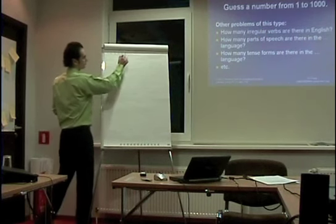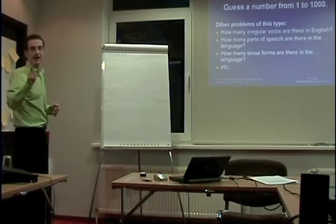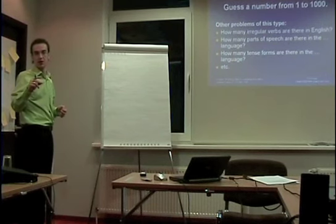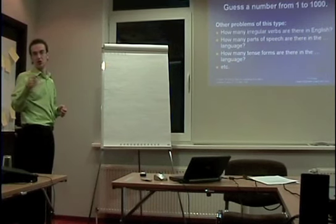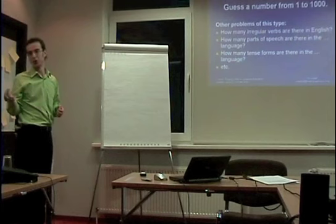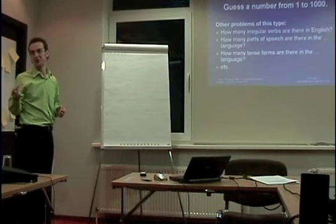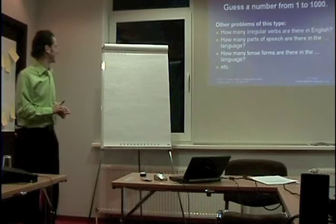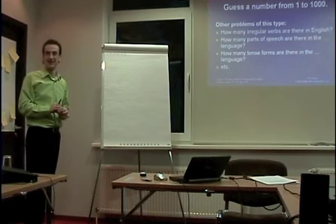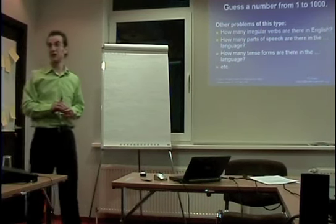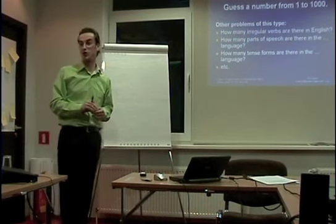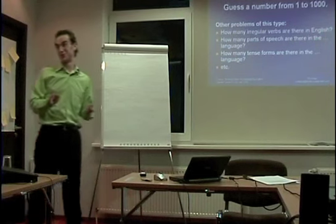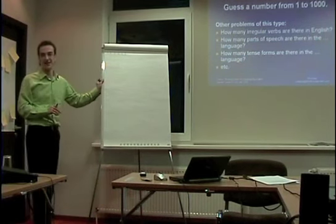Did you need to ask that question — does it have three digits? Or did you already know it has three digits? Because there was already a question: is it less than 150? And the answer was no, so it was already implied.